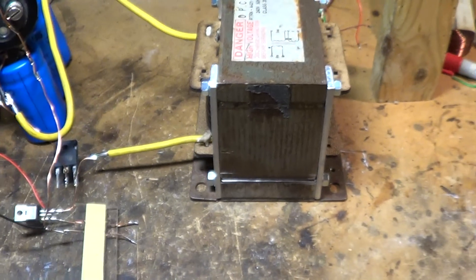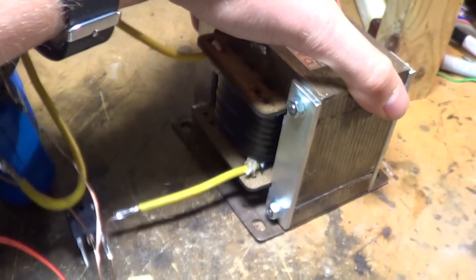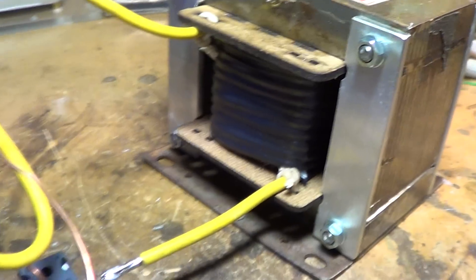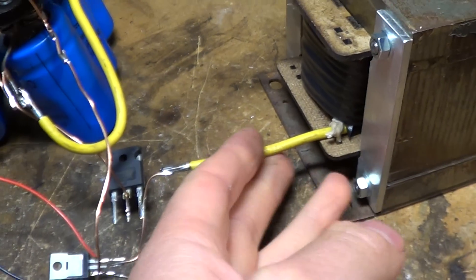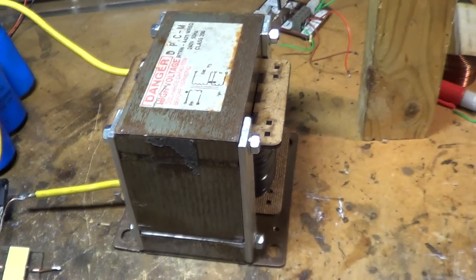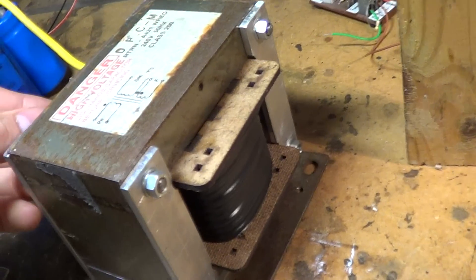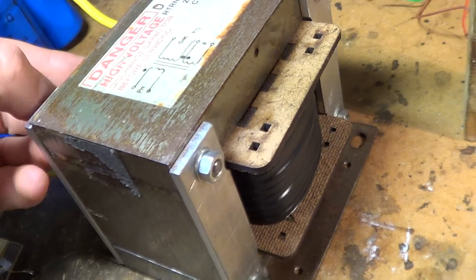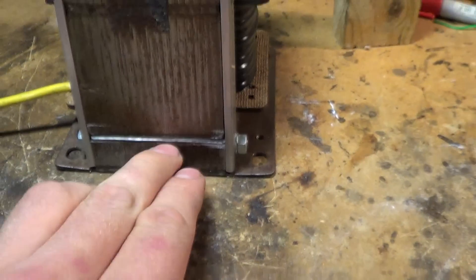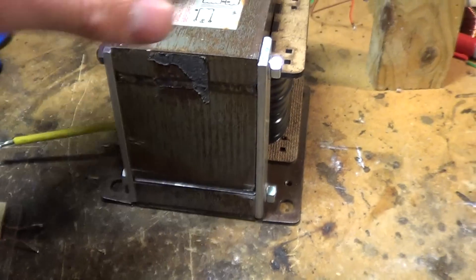Ok, this is the big inductor that I've just finished building. It's ten turns of heavy equipment cable on the microwave oven transformer core. It's got the wooden bobbin that I laser cut, and there's a gap of half a millimetre formed with a piece of plastic sheet.